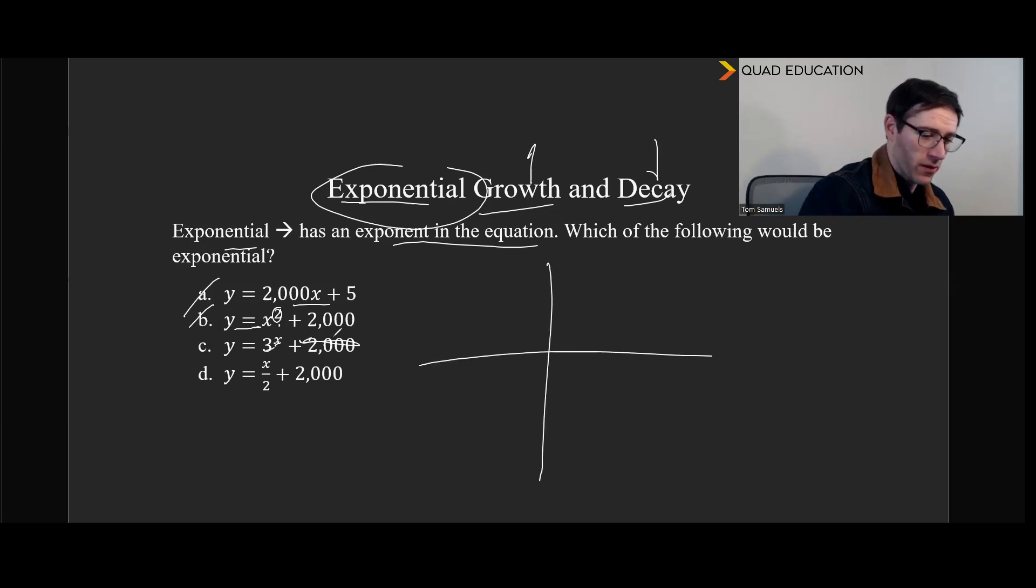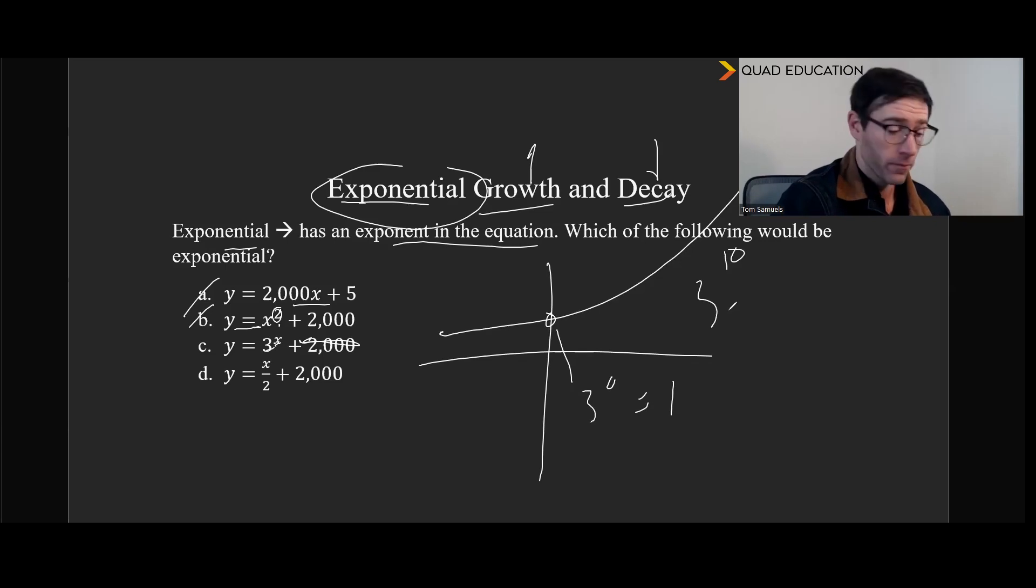If we take a second to ignore the 2,000 here, that's just going to be a function shift up or down. 3 to the x is going to look like this, as we start with 3 to the 0, which is 1. And then as that exponent increases, this is going to increase exponentially, because we're going to be tripling every time we reach a new integer. So 3 to the 10 is already a really, really big number. So exponential growth has the potential to get an output value to be very large very quickly. Or in the case of decay, it's going to be very small very quickly. And then here in d, that's just another linear equation. That's 1 half x plus 2,000, which is also a straight line.